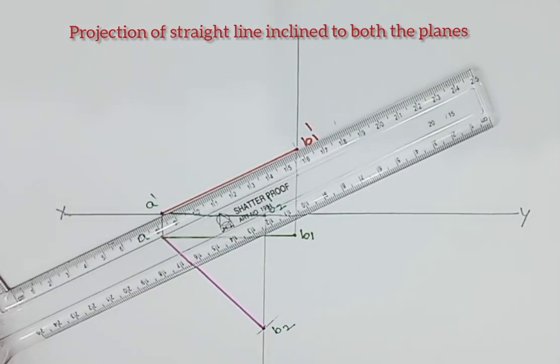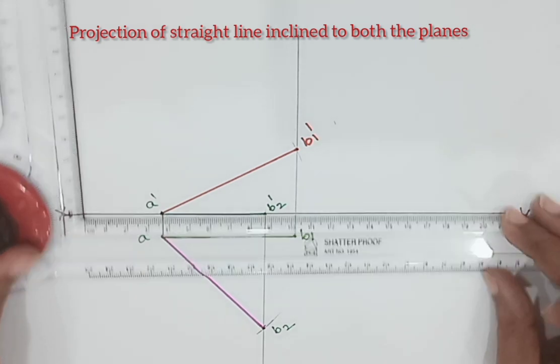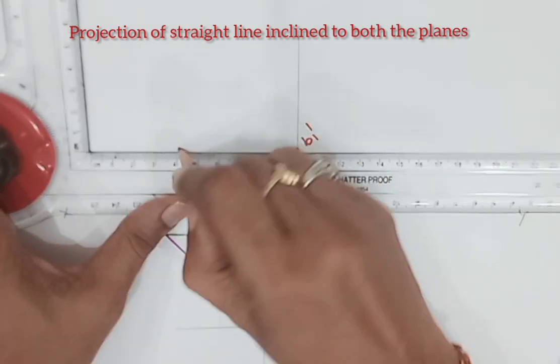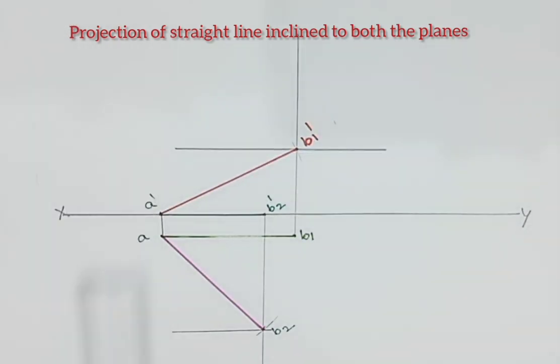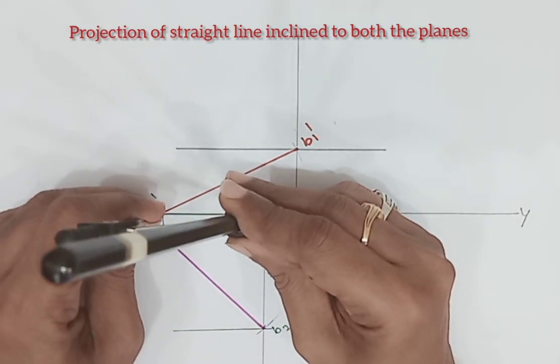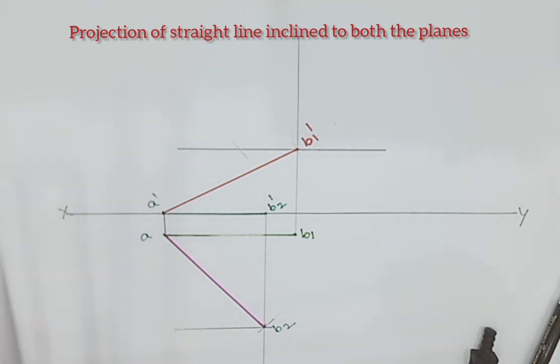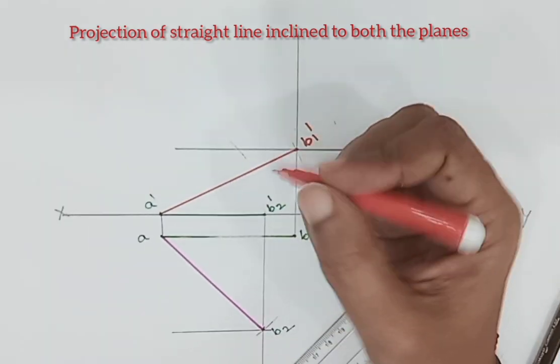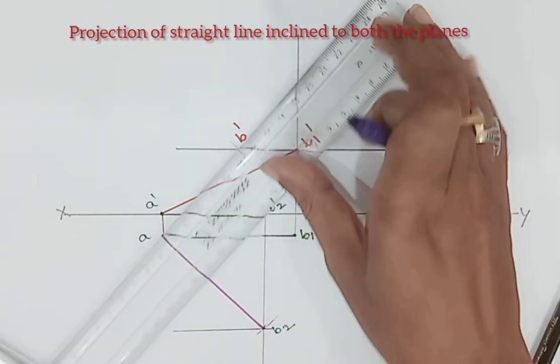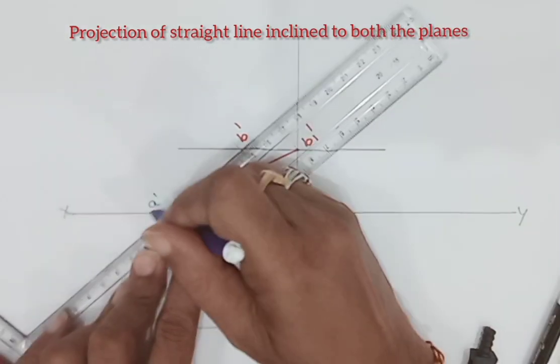After that draw locus of path lines passing through the top view point B as well as front view point B. After that, A dash as a center, AB2 dash as a radius, draw an arc. Name this point as B dash. Join A dash as well as B dash.